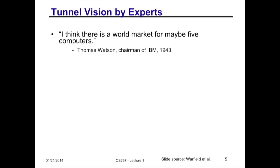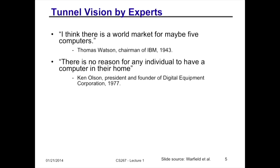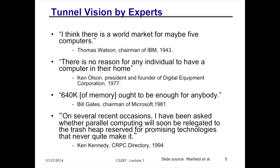Thomas Watson, founder of IBM in 1943, didn't think he could sell more than five computers. Ken Olson, president of DEC, said there's no reason for people to have a computer in their house. Bill Gates said why would anybody ever need more than 640K of memory — which is now in your wristwatch. And Ken Kennedy, a pioneer of parallel software, said in 1994 he keeps getting asked why parallel computing isn't dead — because every year or two a startup would try parallel computing and go bankrupt. So why was that true then, and what has changed?